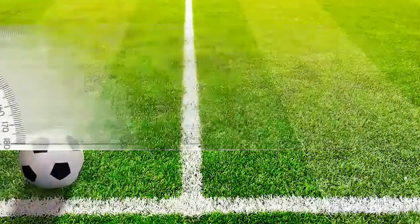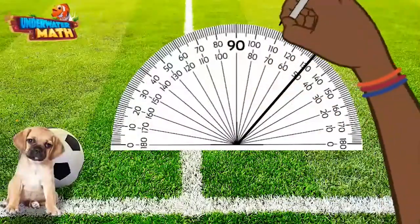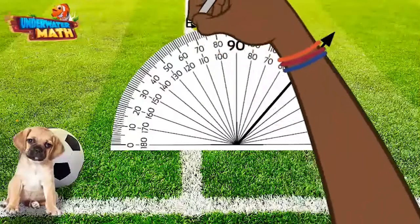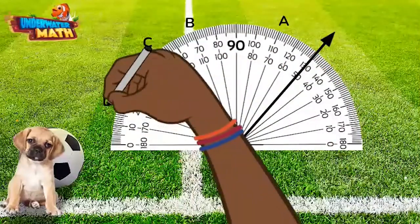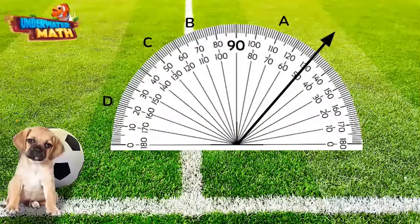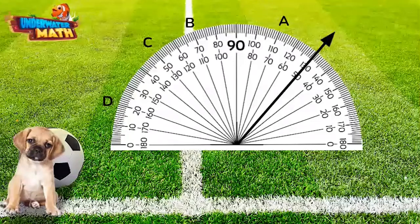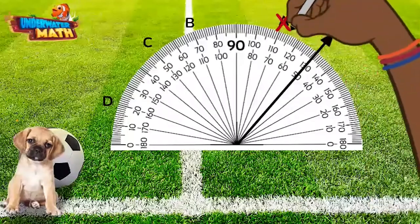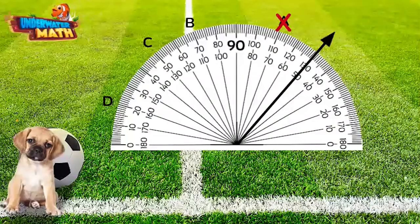Try this one. This ray points to 50 degrees. To make a 110 degree angle, which point should our next ray go through — point A, B, C, or D? Point A is at 110 degrees, but on the top. We also aren't looking for 110 degrees on our protractor — we are looking for a distance of 110 degrees.